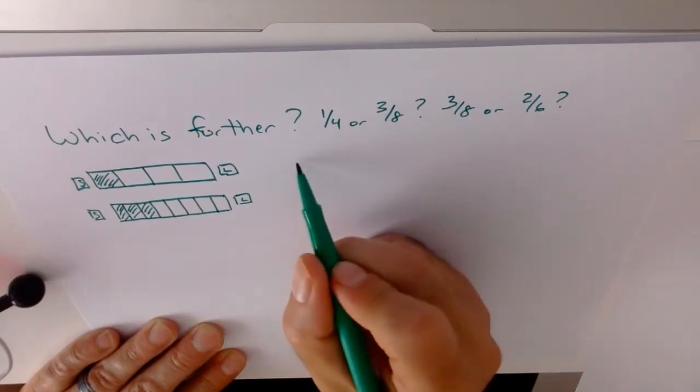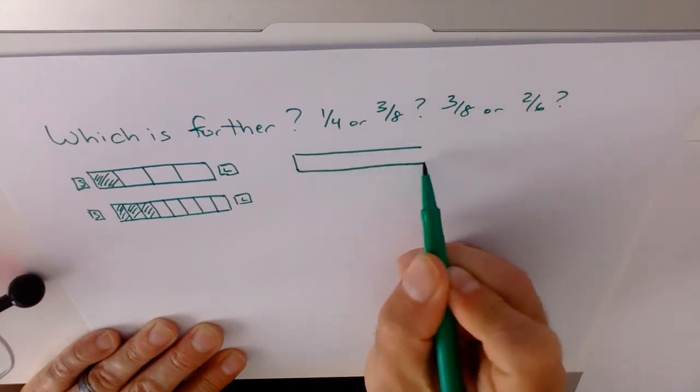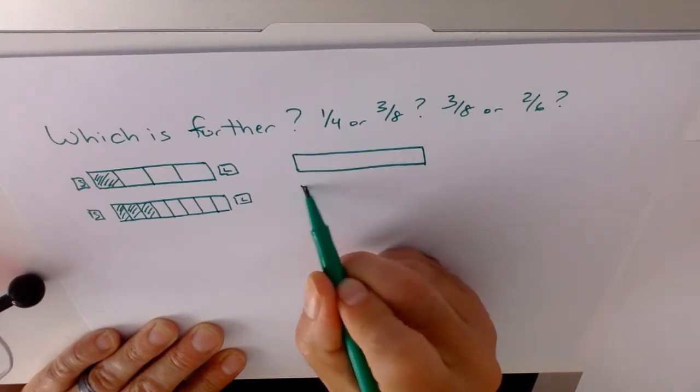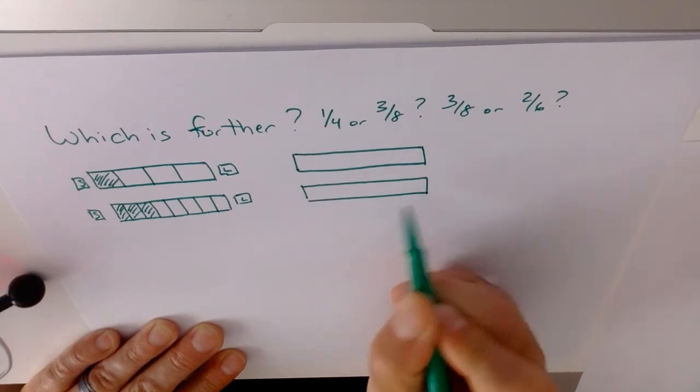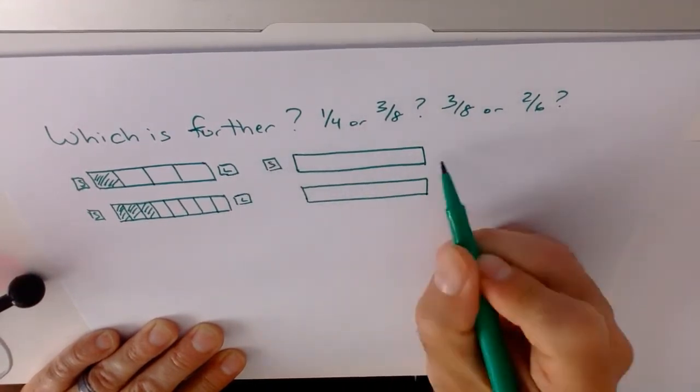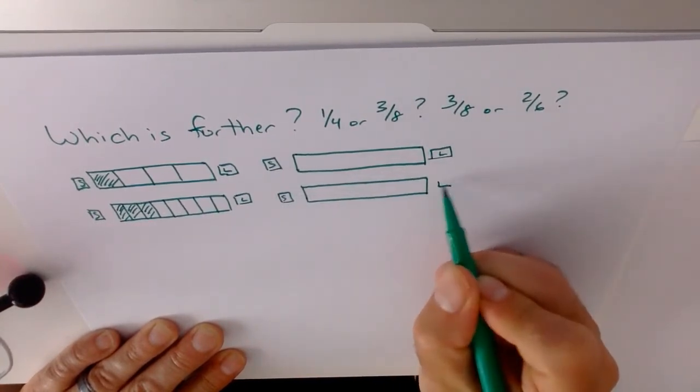We also get in trouble when we're trying to compare something like 3 eighths to 2 sixths. So the first thing we do is make sure that these boxes are right about the same. So you've got somebody at the school, going to the library, at the school, going to the library.